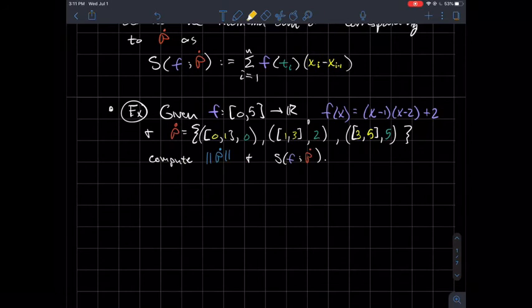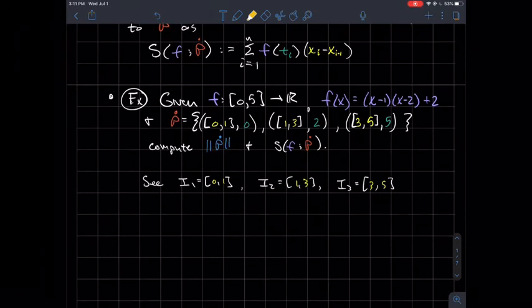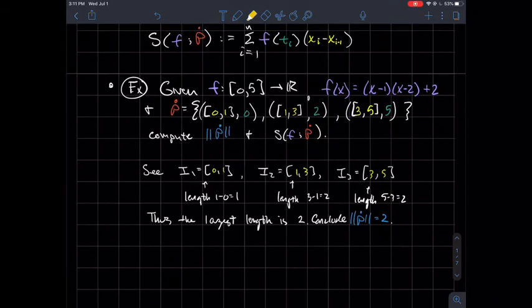So what we want to do is compute: what's the norm of that partition, and what's the Riemann sum of this function with respect to that partition? Let's do the easier part first, the norm. We already said [0,1] is I1, from 1 to 3 is I2, and from 3 to 5 is I3. I'm just going to compute the length of each of those. So I1 has length 1, I2 has length 2, and I3 has length 2 as well. I just look at what's the biggest of those numbers: 1, 2, or 2. Well, 2 is the biggest. Therefore, the largest length is 2, and so the norm of this partition is equal to 2.